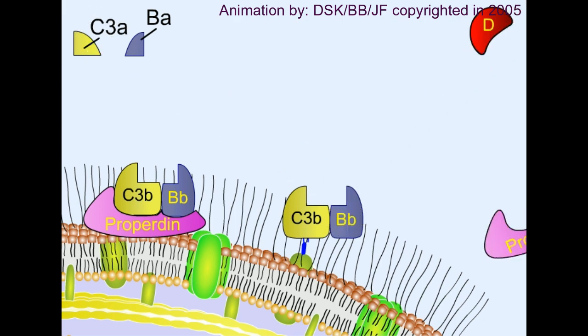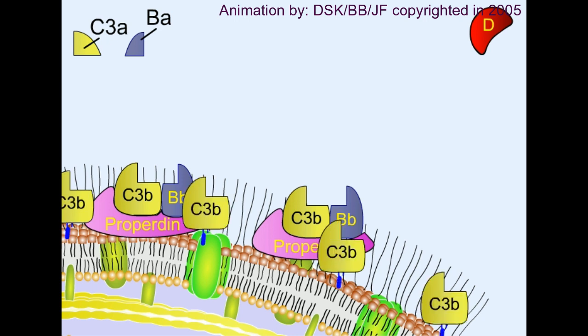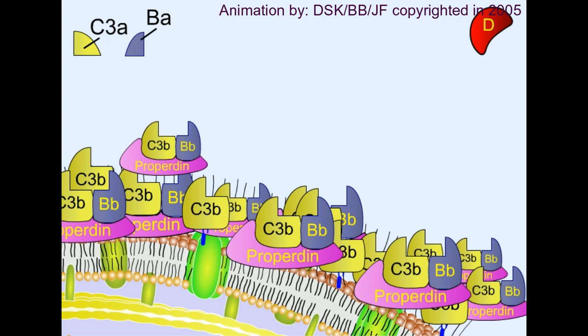By the same mechanism, soon a lot of C3b-Bb complexes start to form that can further cleave C3 complexes. As a result, a lot of C3b is embedded and attached to the membrane surface in very little time.